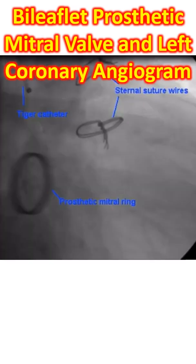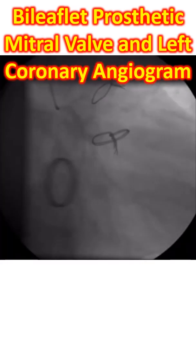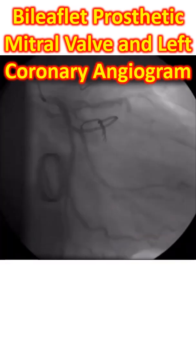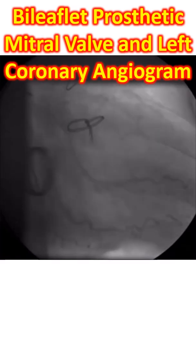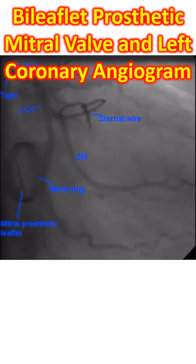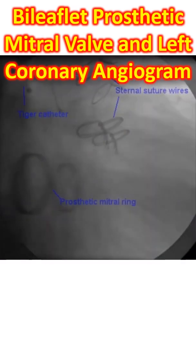Here the valve ring is seen in a different plane. You can see the coronary angiogram as well in the background. This is a still image of the coronary angiogram showing the various branches of the left coronary artery.